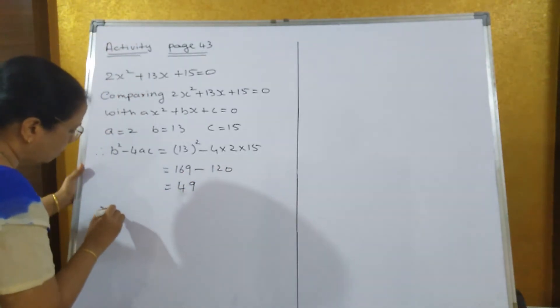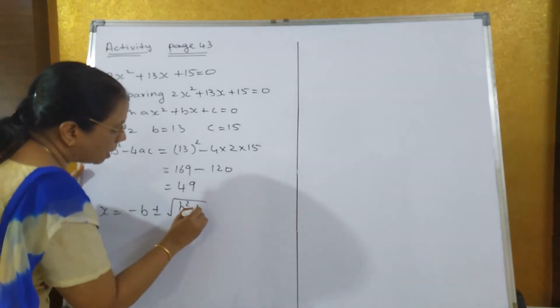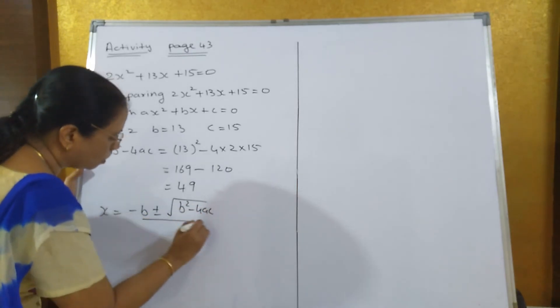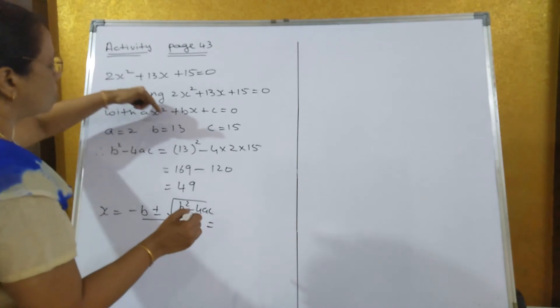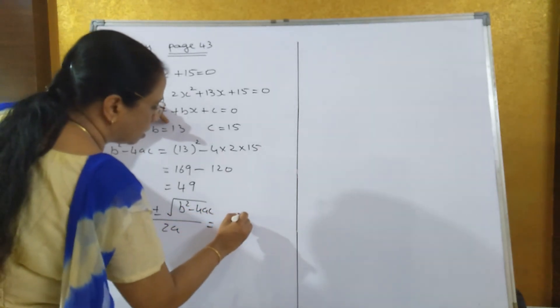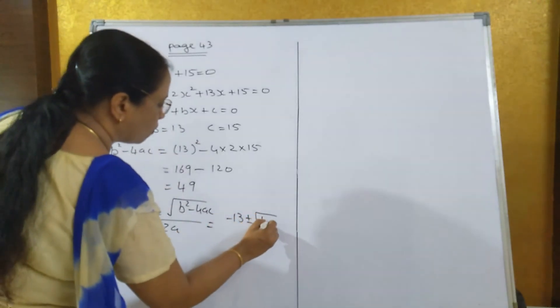Now what is the formula? x = -b ± √(b² - 4ac) / 2a, which is 2.